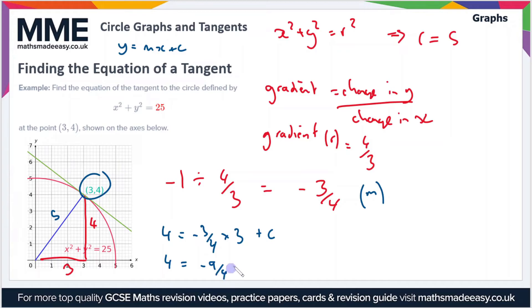Now I'll bring these workings up to here just because there's a bit more space. If we solve this equation for c, we get that c is four plus nine over four, which if you work that out, it comes out as 25 over four.